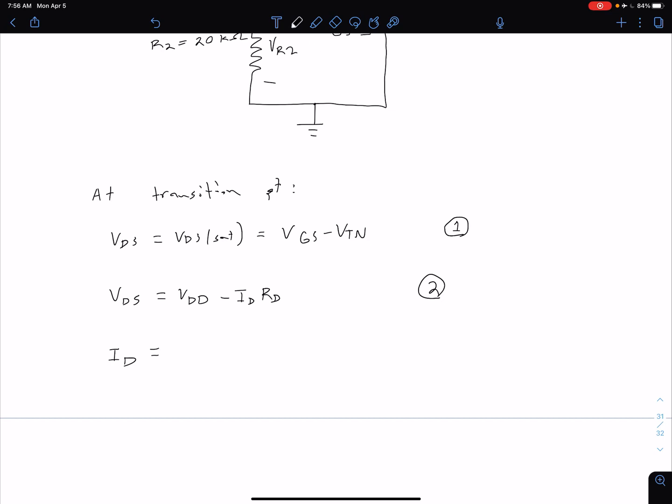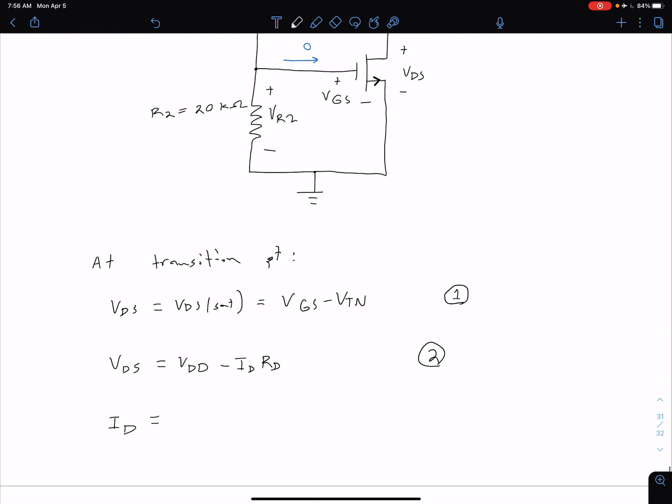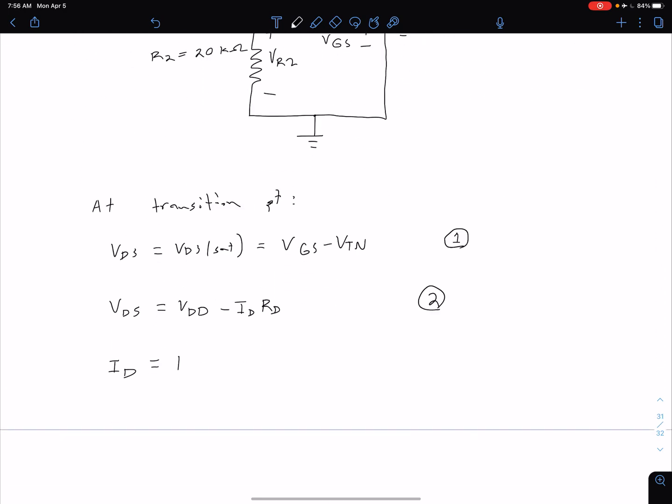The reason we can use either equation is if we look at one of these blue IV curves, the current should be continuous so either equation should hold at this transition point that corresponds to that dashed orange line. Using our saturation equation we can say our ID is equal to KN times the quantity of VGS minus VTN squared. Let's call this equation three.